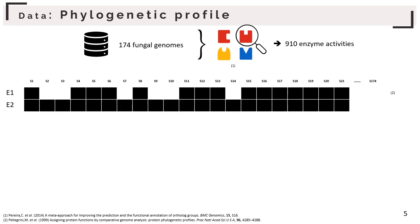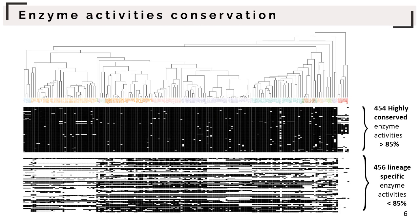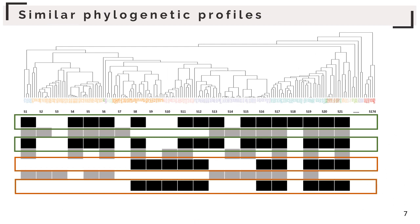With the phylogenetic profile, we classified enzyme activities based on their conservation across our species. We identified that half of enzyme activities are highly conserved — with at least 85% conservation, shared by all fungal species — and the other half are lineage-specific enzyme activities. But if we look closer at lineage-specific enzyme activities, we can observe that some phylogenetic profiles are similar, meaning these enzyme activities are present and absent in the same species.